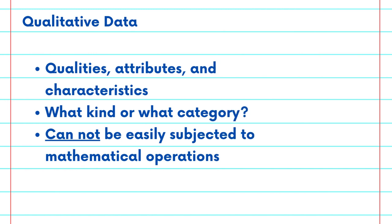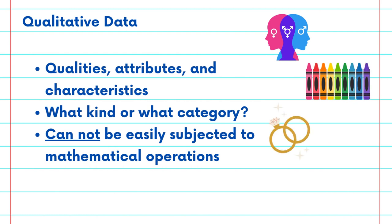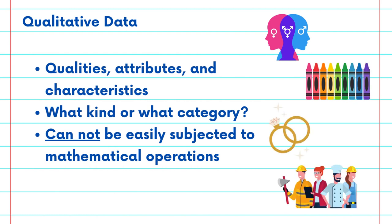Let's move on to qualitative data. This type of data is quite different. It deals with qualities, attributes, and characteristics rather than numerical values. Qualitative data answers questions like 'what kind' or 'what category.' Examples include gender, color, marital status, and job type.